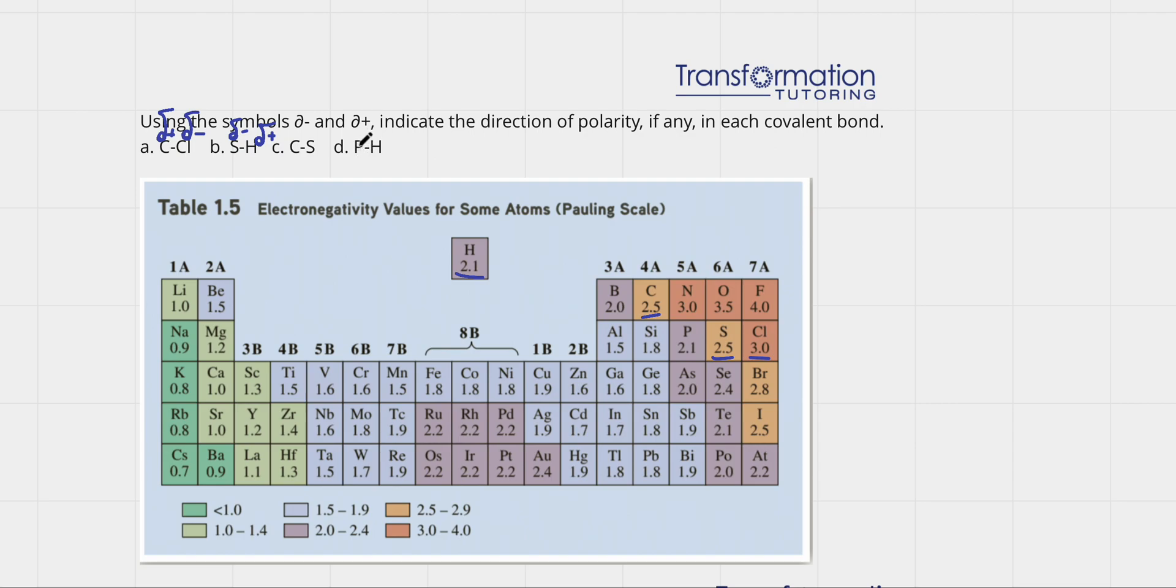And finally, let's look at P and H. Hydrogen is 2.1 and phosphorus is 2.1 as well. What does it mean? That means we will not show the partially negative and partially positive charge because these two elements have the same electronegativity and share their electrons equally.